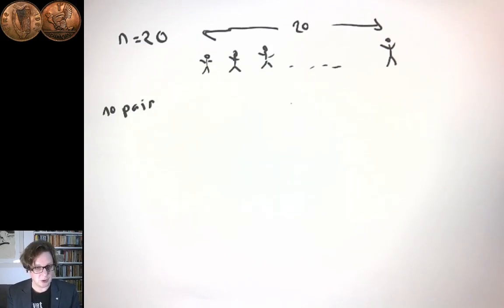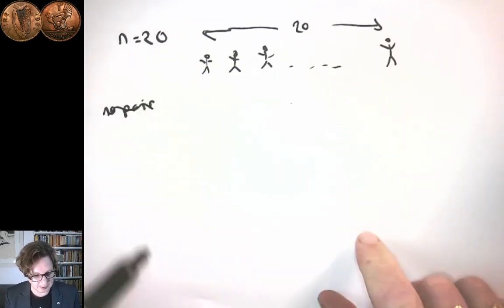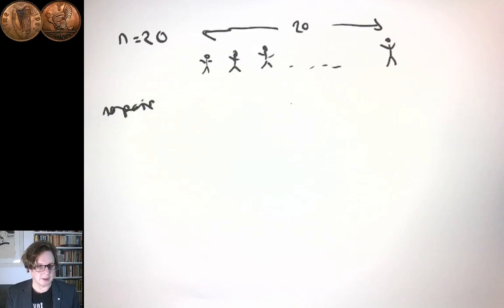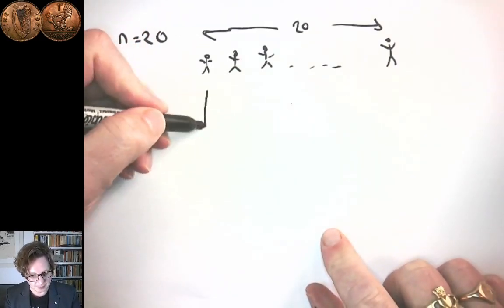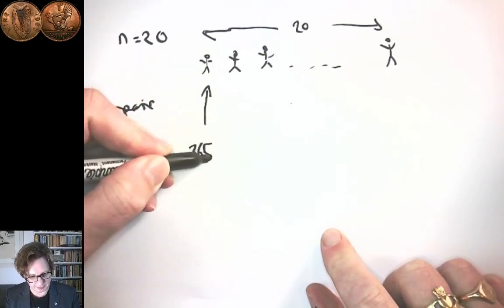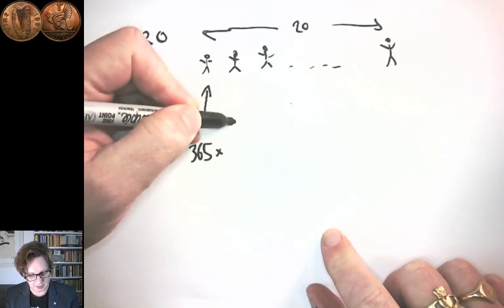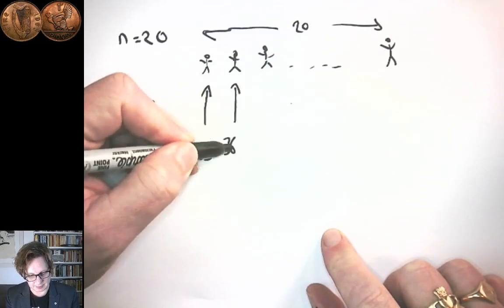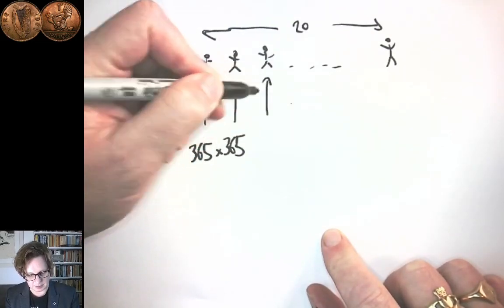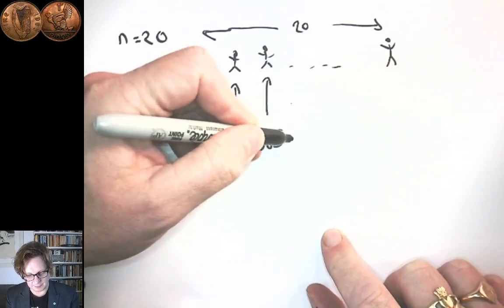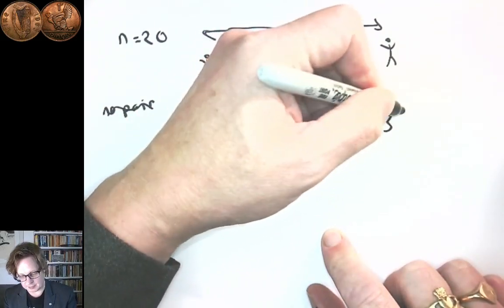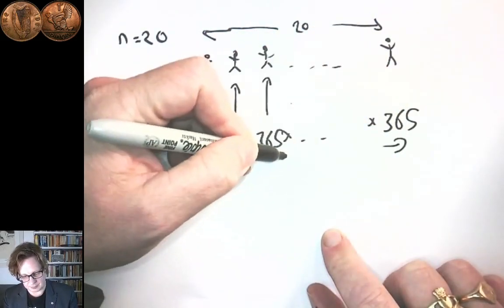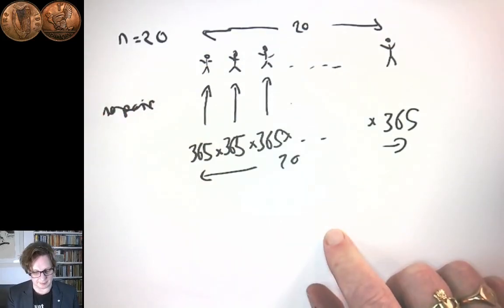So working out the 'at least' probability might seem complicated. It's much easier to work out the probability that no people have the same birthday. The thing that goes on the bottom will be the total number of ways of distributing the birthdays among the people. There are 365 days that you can give each person, so we have 365 to the power of 20.